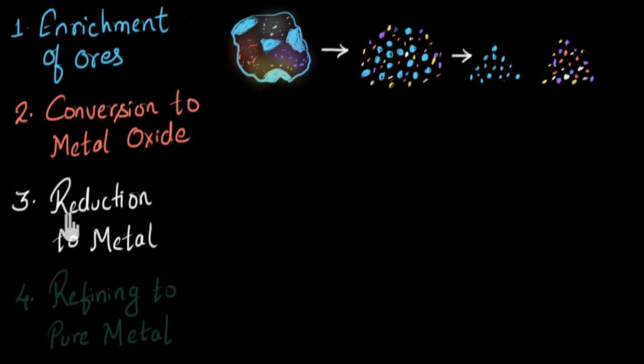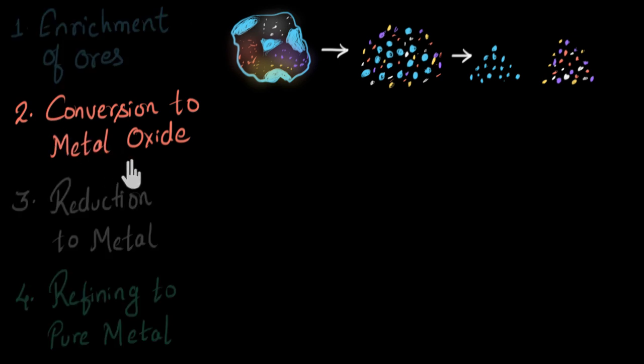After that, we will refine this metal to get pure metal in the fourth step. But in this video, let's talk about the second step: conversion to metal oxide. Now, let's say, for example, we are dealing with zinc ore.